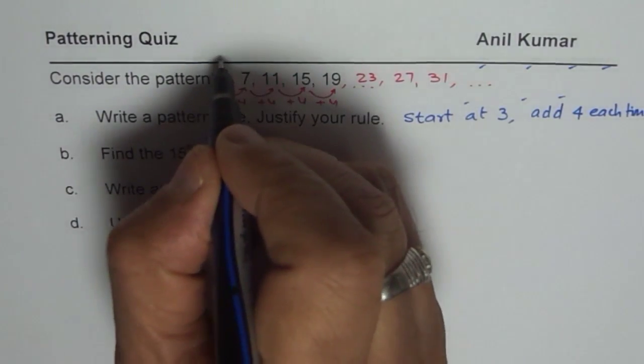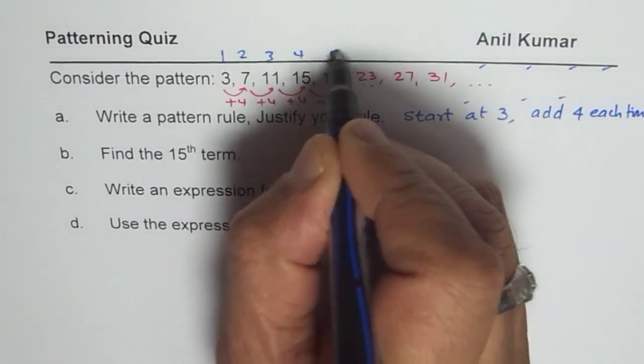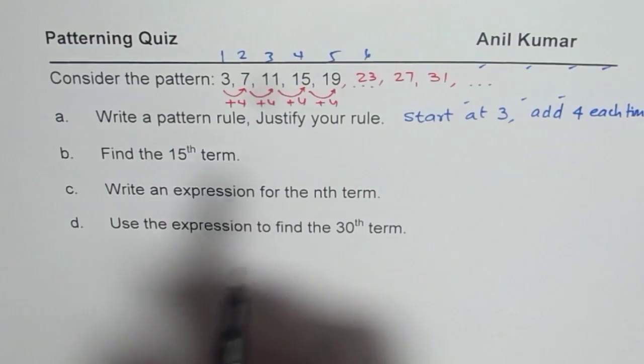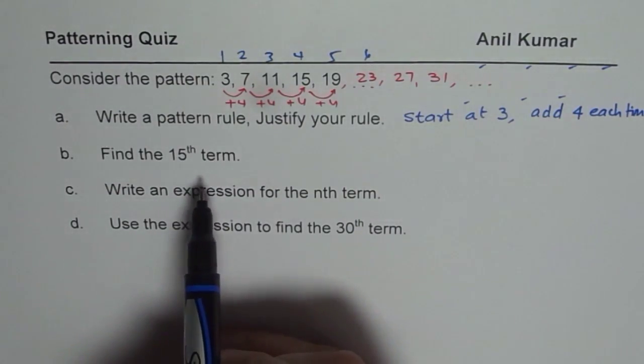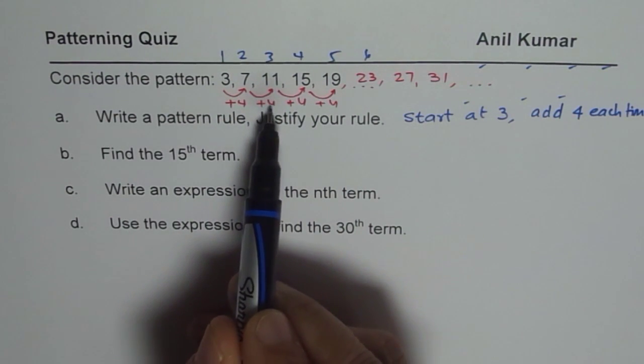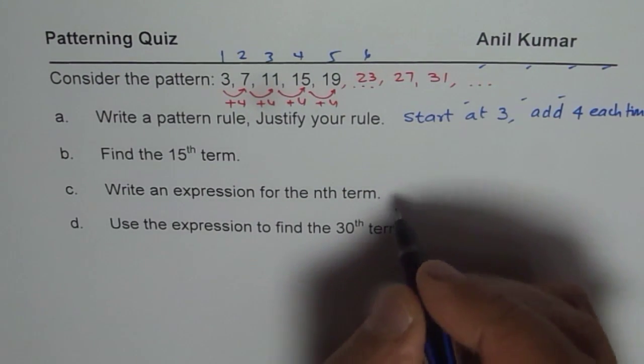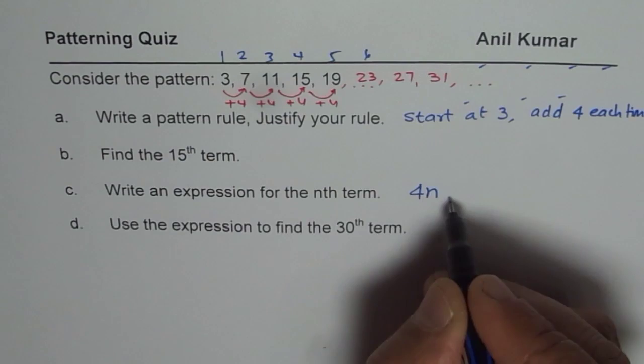Let us see how to write an expression for the nth term. This is called the first term, then second, third, fourth, fifth, sixth. How do I write an expression for the nth term? Since we are adding 4 each time, 4 has to do something with our expression. It is 4 times n, I am sure. So, I could do 4n, since we are adding 4 each time.